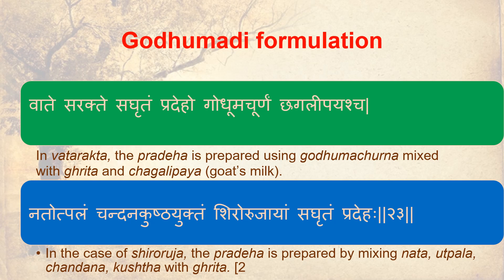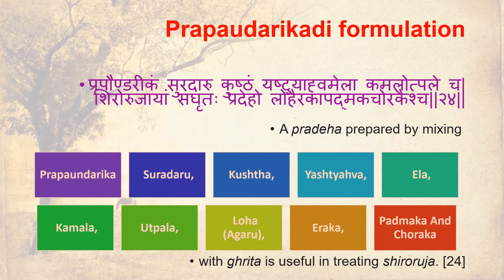Gurdumadhip Formulation: In Vada Rekta, the Pradeha is prepared using Gurdumachurnam mixed with Gradaan, Chagali, and Payada — goat's milk. For Shiro Ruja, the Pradeha is prepared by mixing Nada Utpala, Chandana, Kushta with Gradaan. Propoundary Gadi Suradharu Kushta, Yeshti Ahuam, Ela Kamala, Utpala with Gradaan — Sagrutham Pradeha.